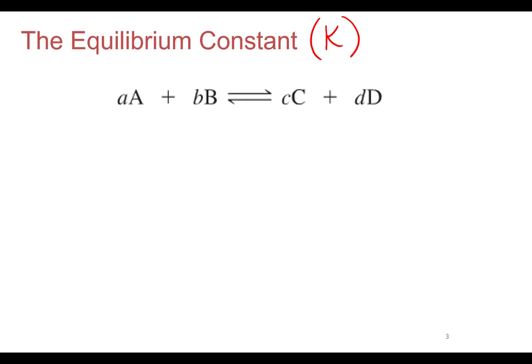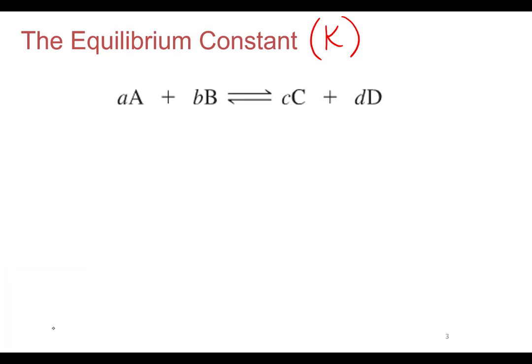This all goes back to the rates, because that's what equilibrium is equal to — the rate of the forward equals the rate of the reverse. Here we have a generic equilibrium system: A + B goes to C + D. We have two rates, so we can write two rate laws. The rate of the forward reaction equals rate constant K times the concentration of A times the concentration of B. For equilibrium we assume molecularity, where the coefficients become their orders, so we write it as [A]^a times [B]^b. That's our rate law for the forward reaction.